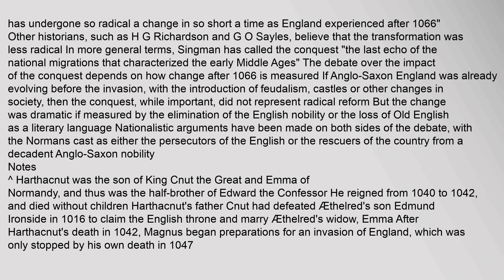Harthaknut was the son of King Canute the Great and Emma of Normandy, and thus was the half-brother of Edward the Confessor. He reigned from 1040 to 1042 and died without children. Harthaknut's father Canute had defeated Athelred's son Edmund Ironside in 1016 to claim the English throne and marry Athelred's widow Emma. After Harthaknut's death in 1042, Magnus began preparations for an invasion of England, which was only stopped by his own death in 1047.